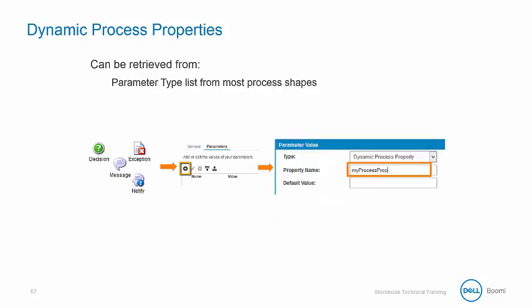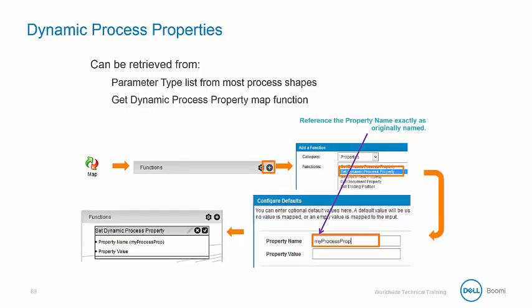To retrieve a dynamic process property, you can use the parameter type list from most process shapes. Or in a map, via the GetDynamicProcessPropertyMap function. Remember, no matter where you're retrieving the property, be sure to enter it exactly how it was when you created it.